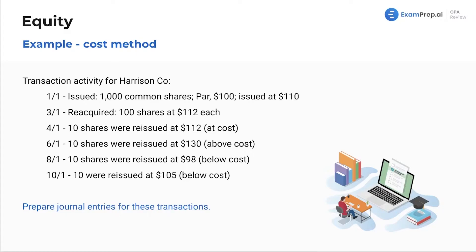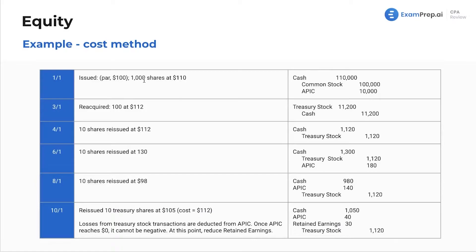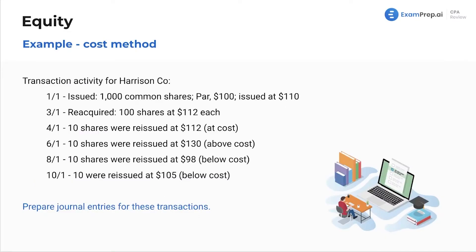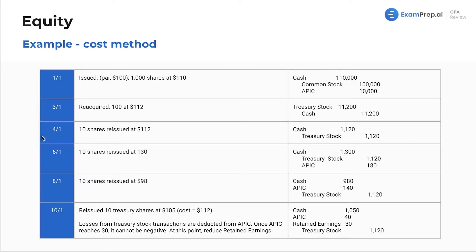Here's an example of the cost method for Harrison Company. We issued $100 par stock — 1,000 shares at $110. We received cash of $110,000. We credit common stock for $100,000 at par value. APIC is that internal gain-tracking system — we keep track of the amount received above par.